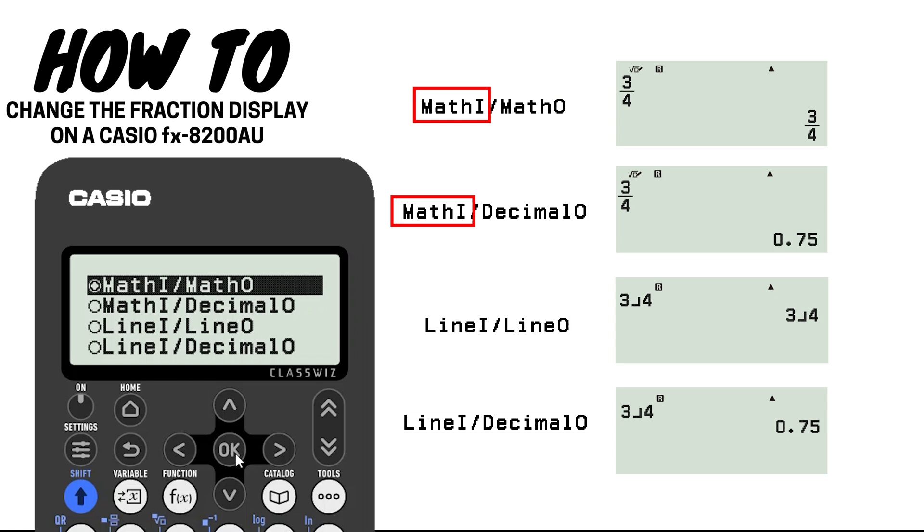By selecting math input, this will result in your fractions looking like fractions, whereas line input means fractions are displayed on a single line.